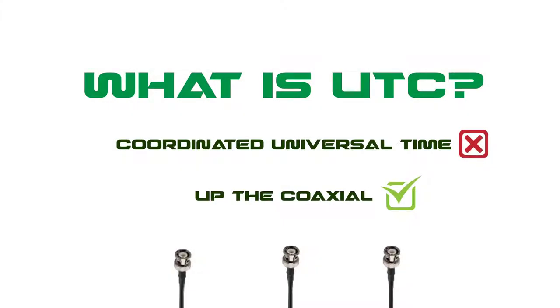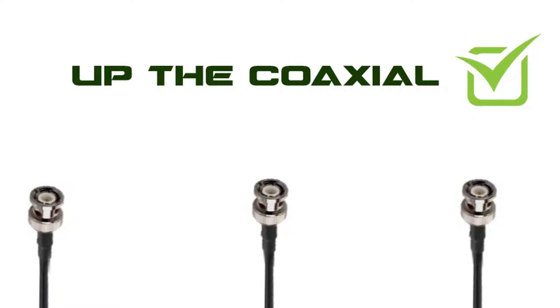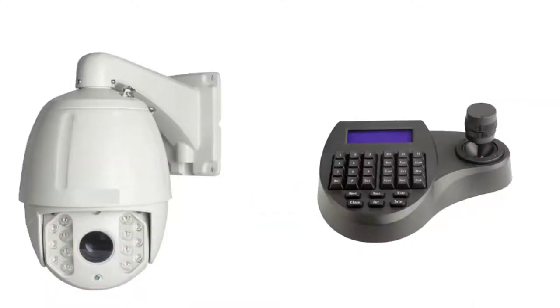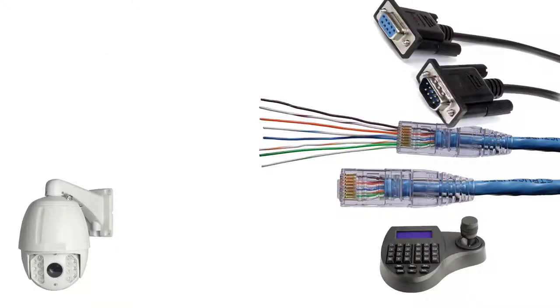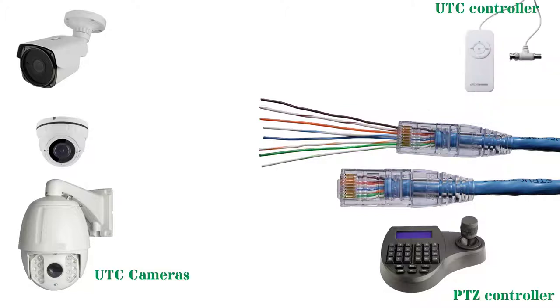In this video we will learn about UTC technology and show you how to enable UTC for your cameras on a Shield Technology DVR. What is UTC? It is not Coordinated Universal Time. UTC in the surveillance world stands for Up The Coax. Traditionally, CCTV cameras which had internal memory, such as PTZ cameras and other cameras that had remote control zoom or focus capabilities, were controlled by other wires, usually RS-485 or RS-232. More recently, with the development of HD cameras with OSD capabilities, UTC OSD controllers emerged, which were programmed to control specific cameras.